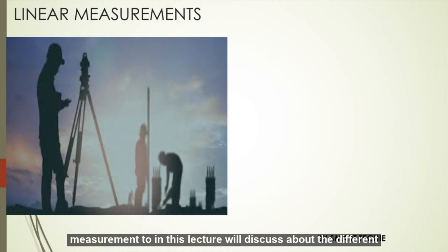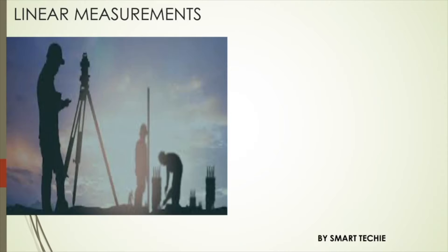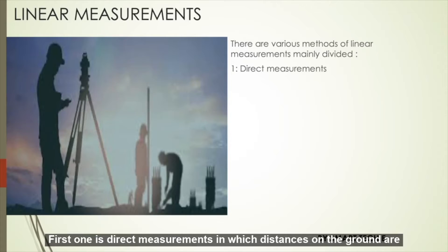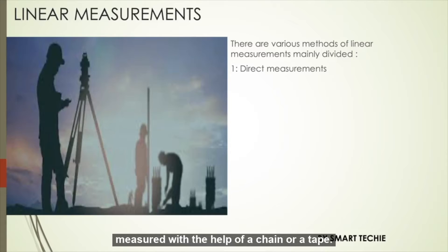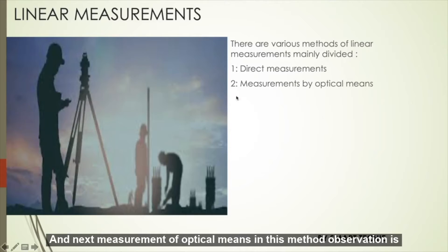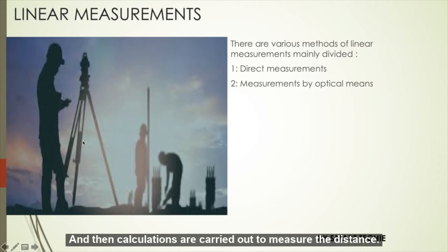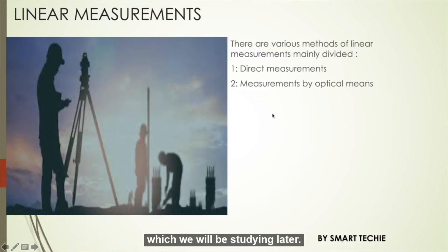In this lecture, we'll discuss about the different methods in measuring a larger area and how it is carried out. They are mainly divided into three main heads. First one is direct measurements in which distances on the ground are measured with the help of a chain or a tape, and then the length is noted down directly. And next, measurement of optical means. In this method, the observation is taken with the help of a telescope, and then calculations are carried out to measure the distance. This kind of method is carried out in tachymetry or triangulation, which we'll be studying later.